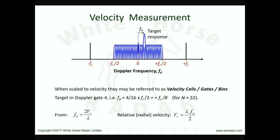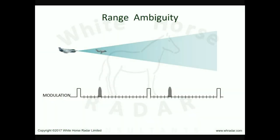Returning to range measurement, let us imagine that our target range increases. We can see how its return becomes correspondingly later and eventually falls within the second receiving period. The periodicity of the pulsed modulation means that the previous transmitted pulse now gives rise to a return in the corresponding range gate of the first receiving period. A return received within the first receiving period is termed a first trace echo, giving the false impression of a close-range target. A return in the second receiving period is termed a second trace echo, which corresponds to the true target range here.